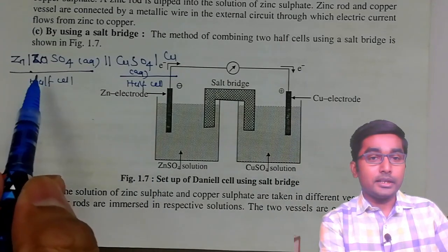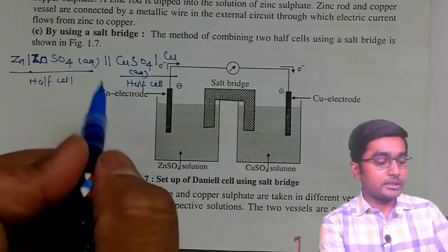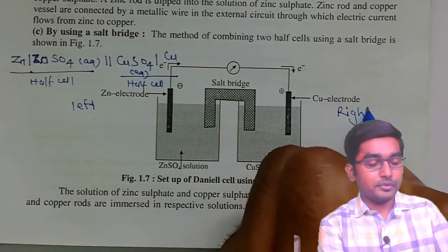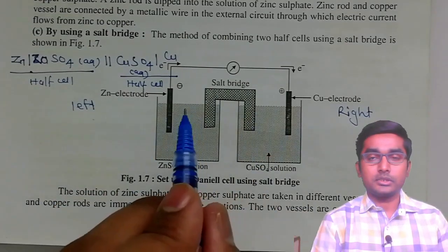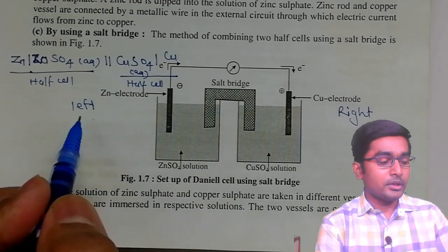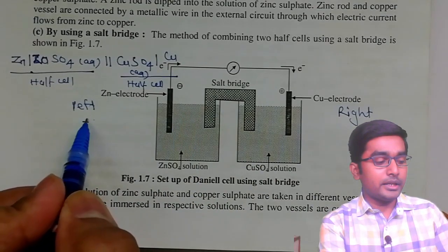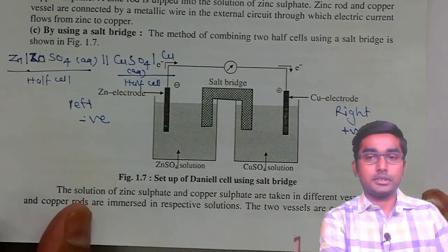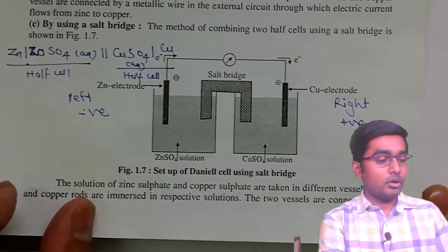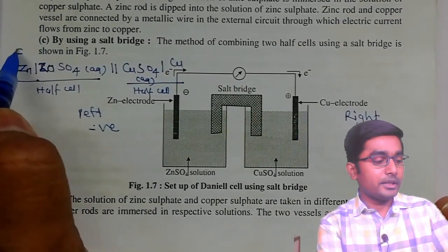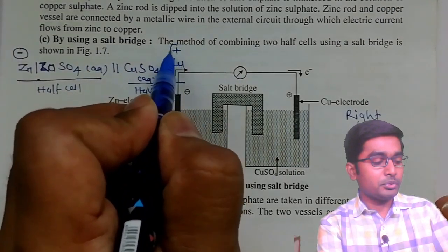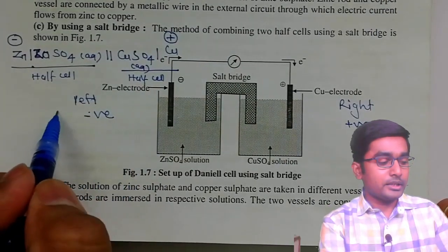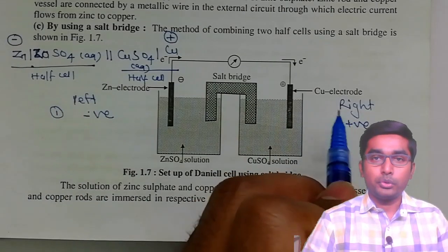The left-hand side electrode and the right-hand side electrode have specific conventions. The left side electrode is always the negative electrode and the right side electrode is always the positive electrode. So at the top you can write a negative sign on the left and a positive sign on the right.